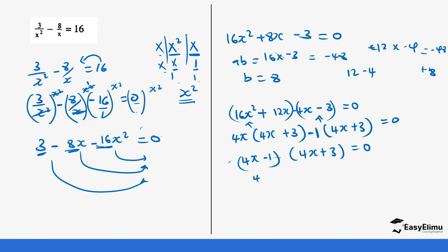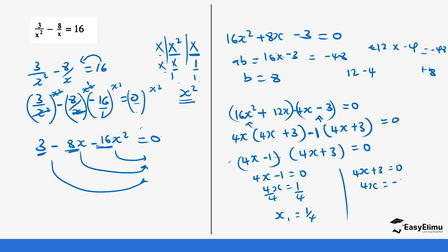From (4x minus 1)(4x plus 3) equals zero: the first factor gives 4x minus 1 equals zero, so 4x equals 1, and dividing both sides by 4, x equals 1 over 4. The second factor gives 4x plus 3 equals zero, so 4x equals negative 3, and dividing by 4, x equals negative 3 over 4.